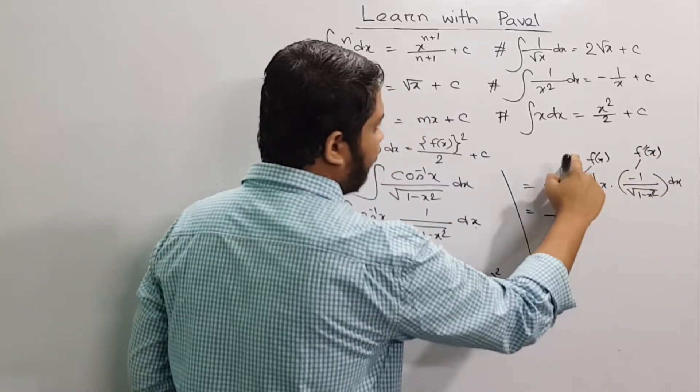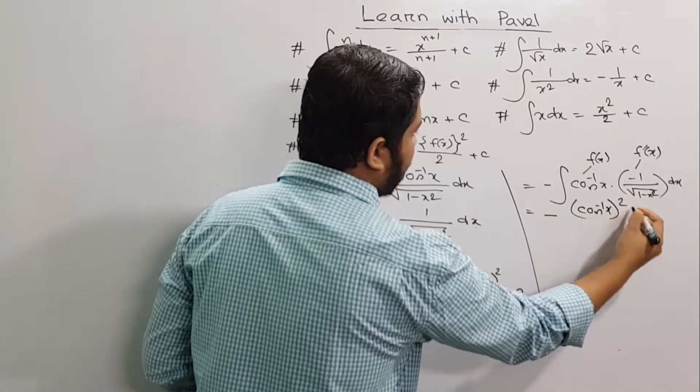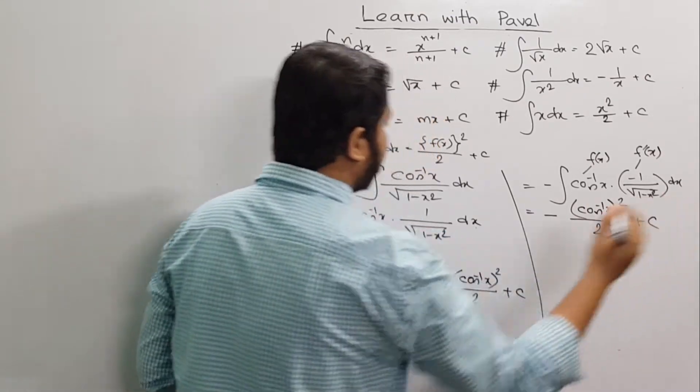So the answer is f of x. f of x is cos inverse x whole square divided by 2 plus C.